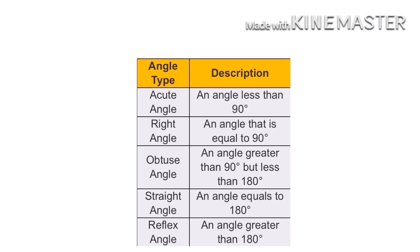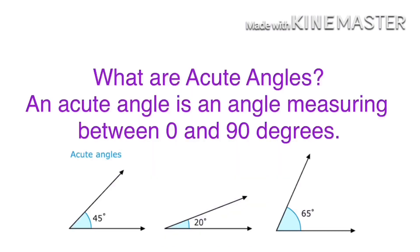First, let us learn what is an acute angle. An acute angle is an angle measuring between 0 and 90 degrees. All angles that come between 0 and 90 degrees are called acute angles. For example, 45 degrees is less than 90 degrees, so it is an acute angle.